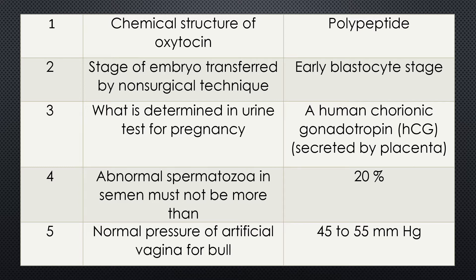Question 3. What is determined by urine test for pregnancy? Answer: human chorionic gonadotropin (hCG) is determined in pregnancy. This hormone is secreted by the placenta and is detected in urine for the pregnancy test.